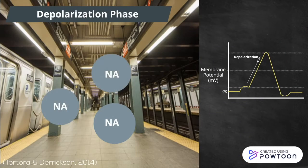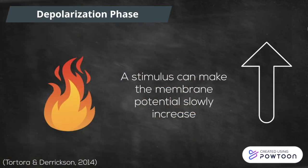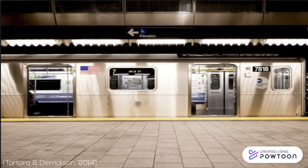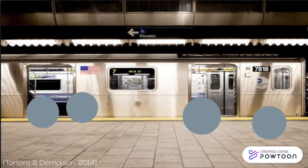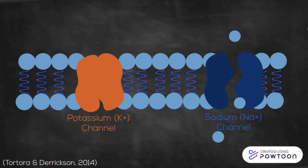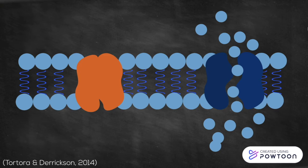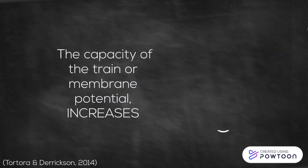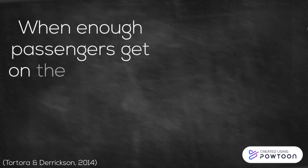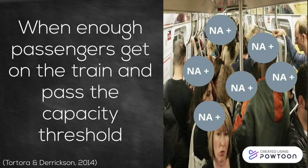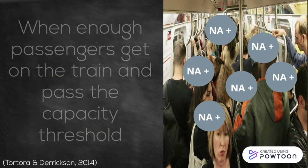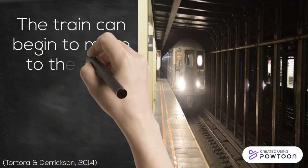The first step is the depolarization phase. Here, the platform of the subway station is crowded with sodium passengers waiting to get on the train. When there is a stimulus, such as touching a hot stove, the membrane potential slowly increases. The sodium doors open, and these passengers rush in as there is more space inside the train. Since more positively charged sodium passengers are entering the cell, the capacity of the train or membrane potential increases. When enough passengers get on the train and pass the capacity threshold, the train can begin to move to the next station, propagating the action potential.